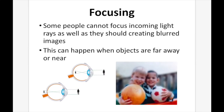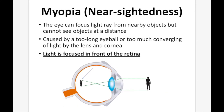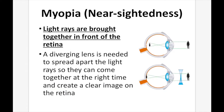Some people can't focus light rays as well as they should, creating blurred images. Myopia, or nearsightedness, is when the eye can focus nearby objects but can't see clearly at a distance. It's caused by a too-long eyeball or too much convergence by the lens and cornea, so the image forms before the retina. A diverging lens is needed to spread the light rays apart so they come together at the right point and create a clear image on the retina.